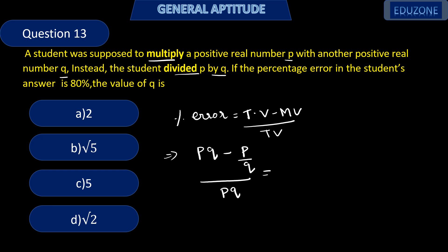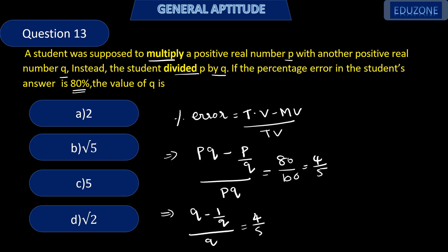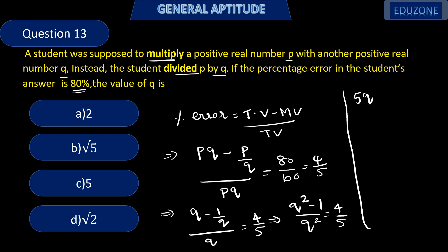It is given that the percentage error is 80%, that is 4 by 5. Cancelling P, we get (Q minus 1/Q) divided by Q equal to 4 by 5, or (Q squared minus 1) by Q squared equal to 4 by 5. Cross multiplying: 5Q squared minus 5 equals 4Q squared, so Q squared equals 5 and Q equals root 5. The answer is option B.